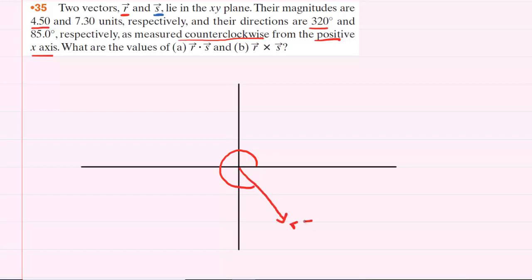And again we know that the magnitude of vector r is 4.5 and then this angle was 320 degrees.